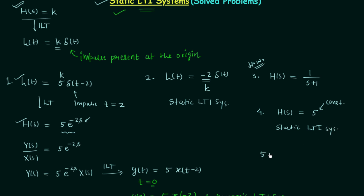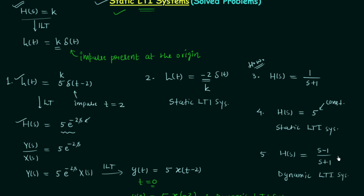In the fifth and last problem, the transfer function H(s) = (s−1)/(s+1). The transfer function is not equal to some constant — it is dependent on frequency. Therefore it is a dynamic LTI system. When you study filters, you will find this is the transfer function of an all-pass filter, so an all-pass filter is a dynamic LTI system.